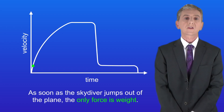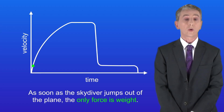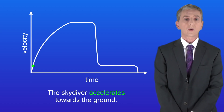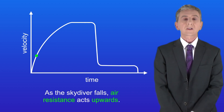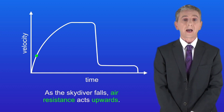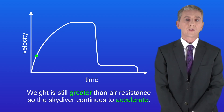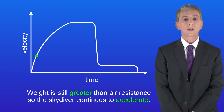As soon as the skydiver jumps out of the plane the only force is weight, so the skydiver accelerates towards the ground. As the skydiver falls, air resistance acts upwards. Weight is still greater than air resistance so the skydiver continues to accelerate.